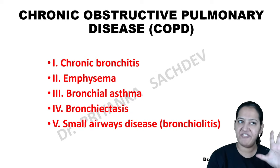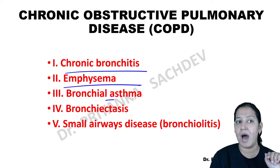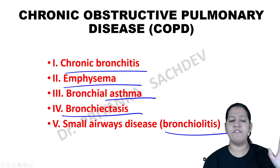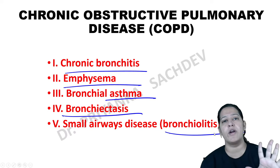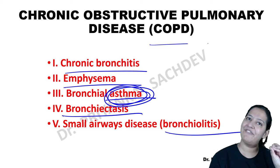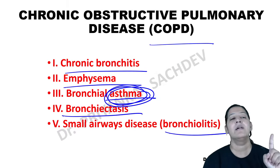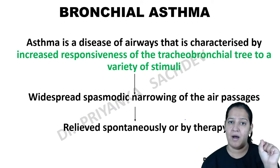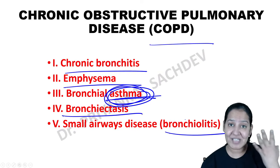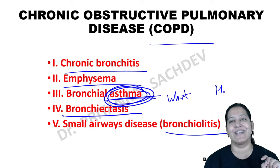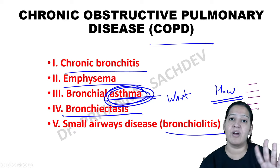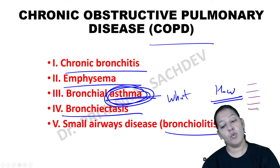There are five types of COPDs: chronic bronchitis, emphysema, asthma, bronchiectasis, and bronchiolitis. Currently I will teach you only asthma. You should know the pathophysiology of asthma to understand the drugs for it. If you know how asthma occurs, you will be able to understand at what level drugs can be used to prevent it and treat it.